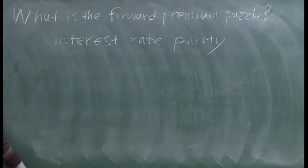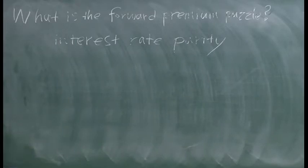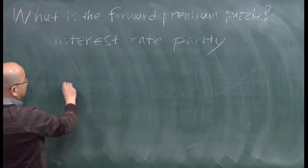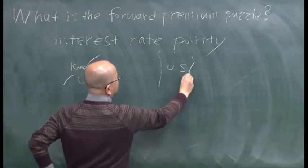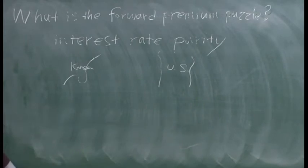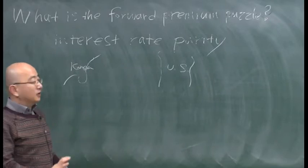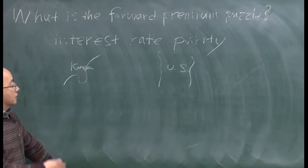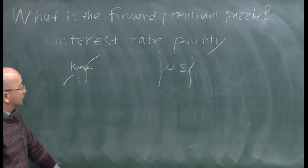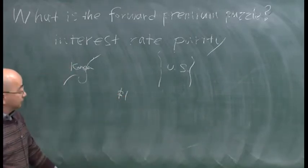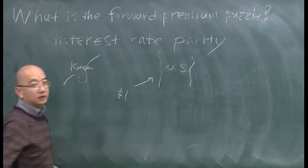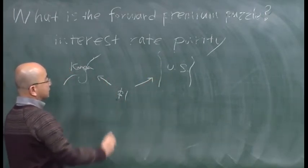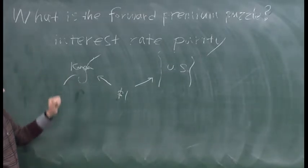It will be easiest to start from an example and think about interest rate parity. Let's consider two countries: Korea and the U.S. As an international investor — this investor may be Korean, American, European, or some other national — let's consider two alternatives. If this investor has one dollar, they may decide to invest in the U.S., or consider the possibility of investing one dollar in Korea.